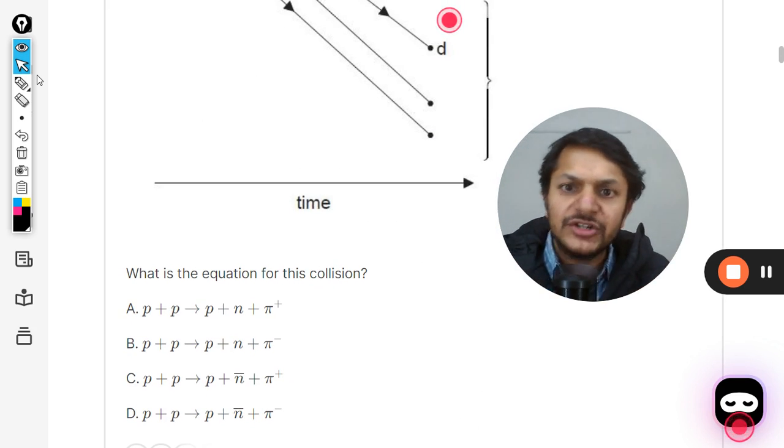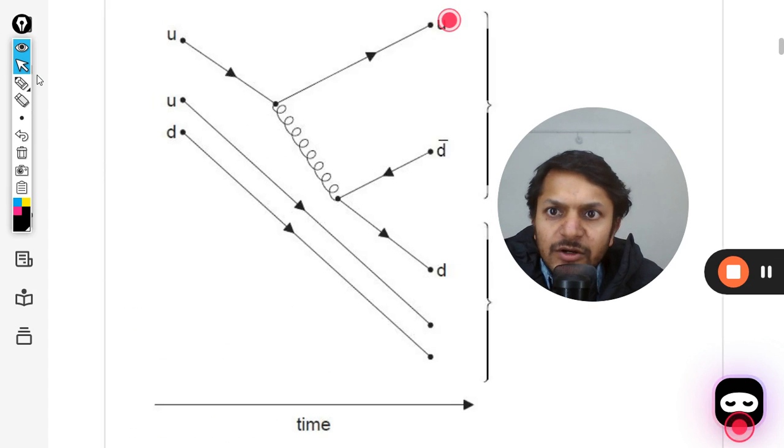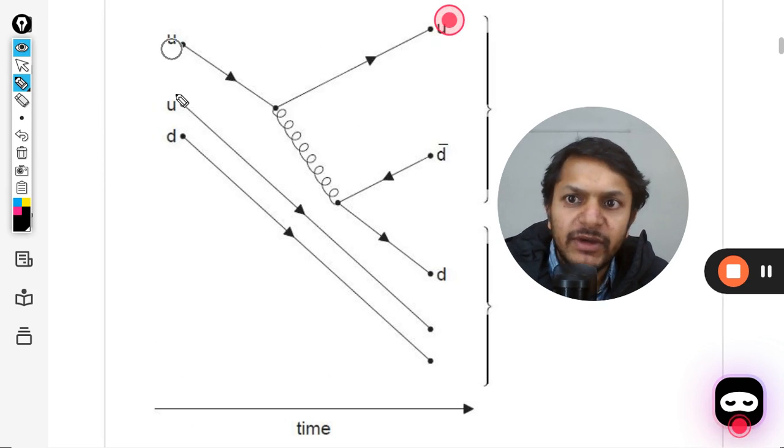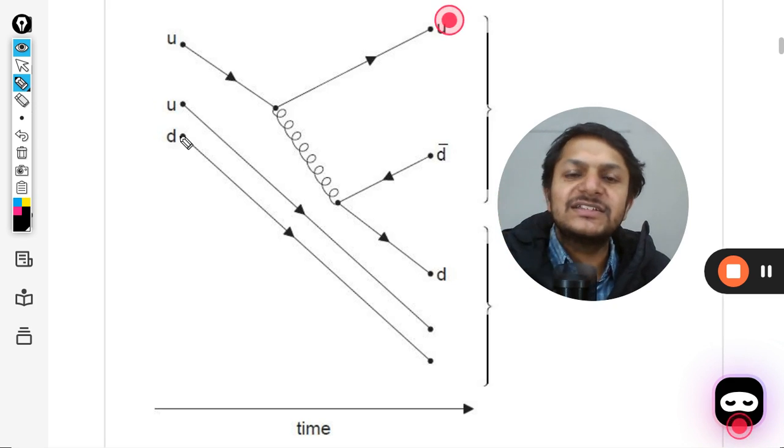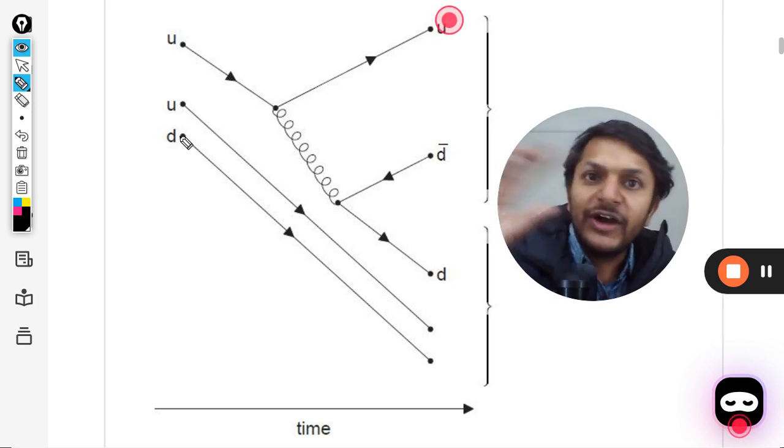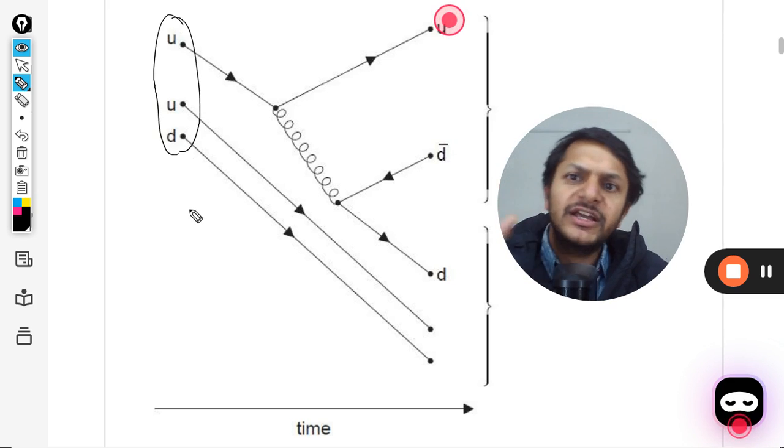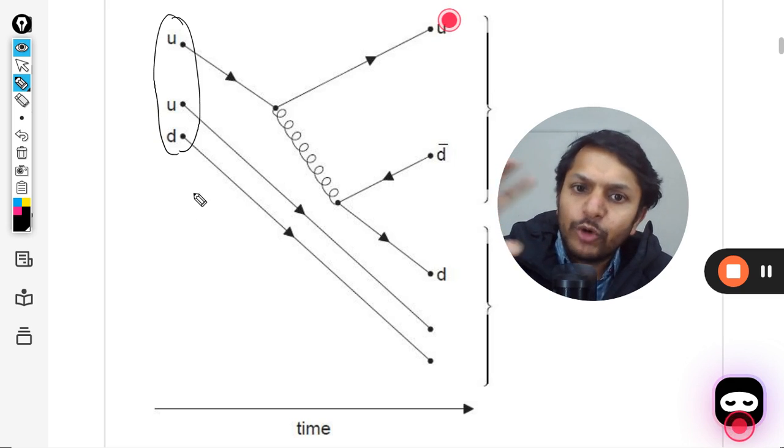Let us try to understand from the Feynman diagram what is happening. We know that proton composition is given by UUD quarks. Be very careful, there is no existence of a quark out of a hadron. These three basically constitute into one element and it becomes a proton.